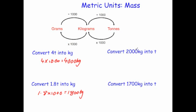Convert 2,000 kilograms into tons. To go from kilograms to tons, you divide by a thousand. So we do 2,000 divided by 1,000, which is equal to 2 tons.